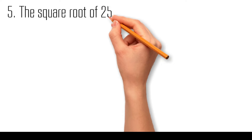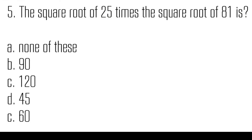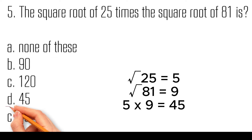The square root of twenty-five times the square root of eighty-one is: none of these, ninety, one hundred and twenty, forty-five, sixty. The square root of twenty-five is five, and the square root of eighty-one is nine. Therefore, five times nine is equal to forty-five.